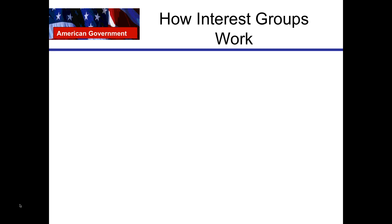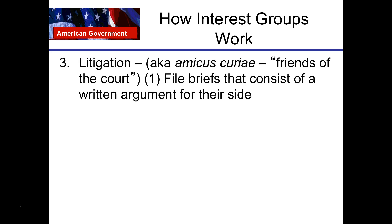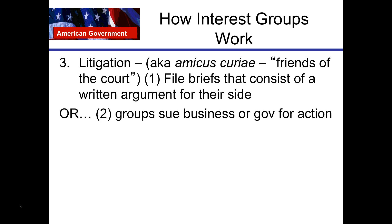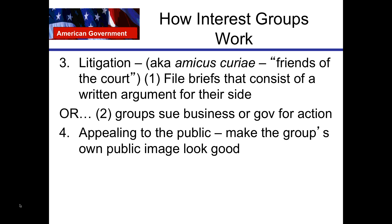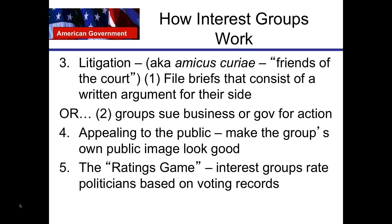Interest groups also participate in litigation. They write amicus curiae briefs — friends of the court briefs — which are written arguments for their side. They'll send these to the federal court system and the US Supreme Court, basically advocating for a court decision favorable to that particular interest group. These groups can also sue businesses or the government for action. Groups also appeal to the public, trying to make the group's public image look good. And they usually rate members of Congress and presidents based on voting records.